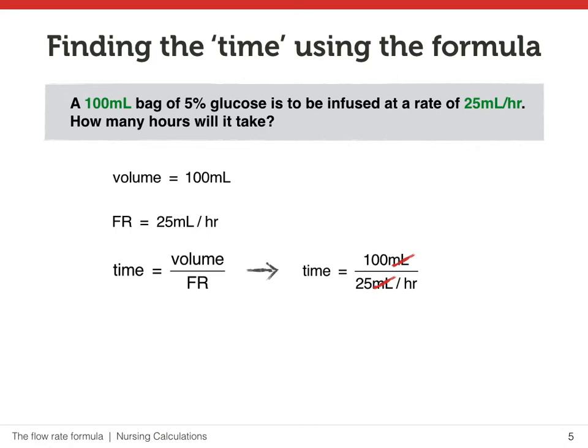Notice here that we have a fraction within the fraction, and the 25 mils per hour is in the denominator. So the denominator of the denominator — that is the hours — gets flipped up and multiplies out the numerator. 100 divided by 25 is 4, and the unit now at the top is hours.